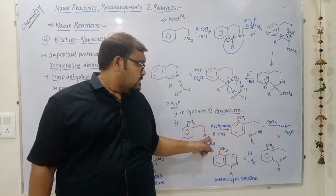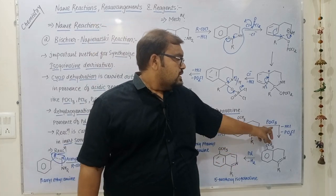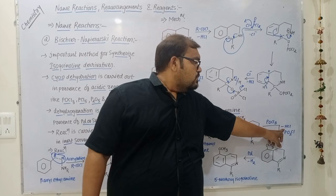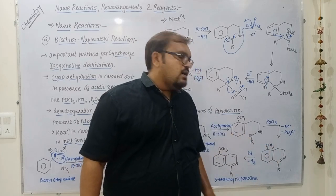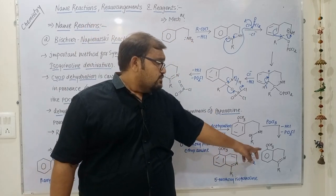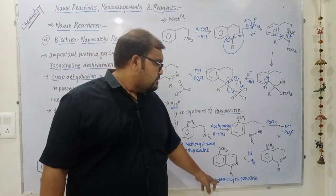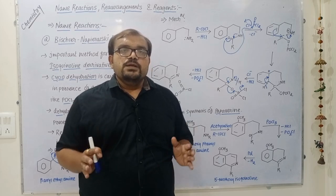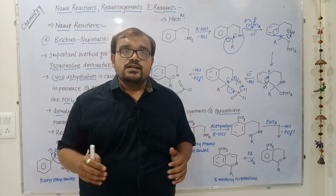The second important application: ortho-methoxyphenylethylamine undergoes acetylation — HCl is lost and we get an intermediate. This intermediate undergoes cyclo-dehydration in the presence of POCl₃; after loss of HCl and PO₂Cl it gives the 3,4-dihydroisoquinoline derivative. The last step — reaction of the 3,4-dihydroisoquinoline with palladium, with loss of hydrogen — gives 5-methoxyisoquinoline as product. By this way we can memorize both important name reactions.